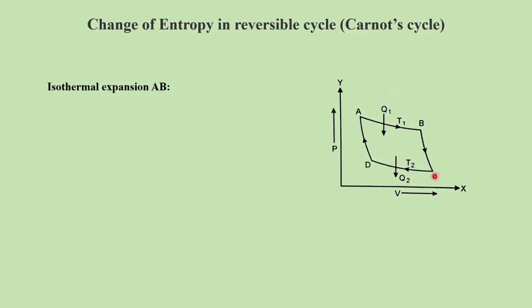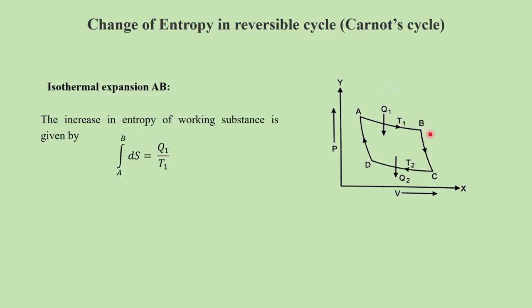The first process is isothermal expansion AB. Suppose Q1 is the amount of heat absorbed at high temperature T1 during the isothermal expansion from A to B. The increase in entropy of the working substance is given by the integral from A to B of dS, which equals Q1 by T1.